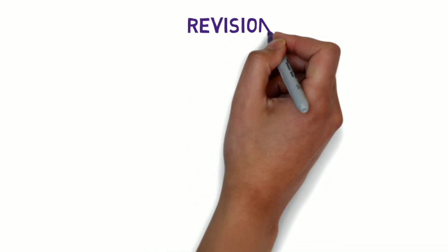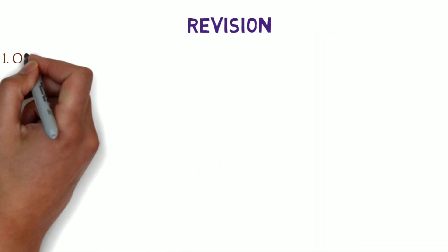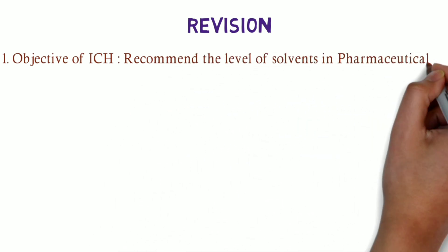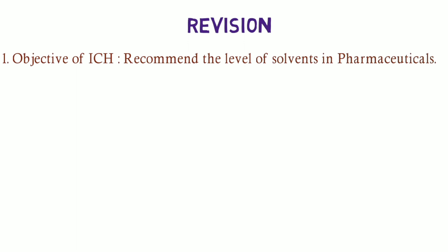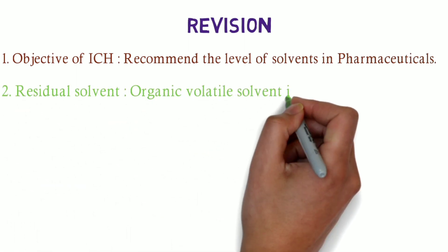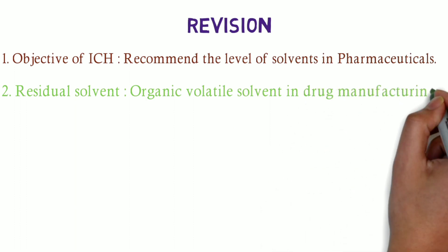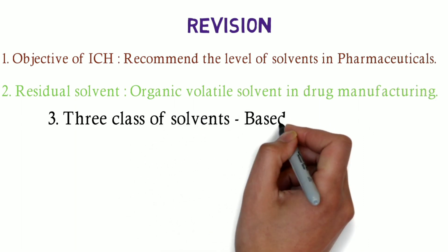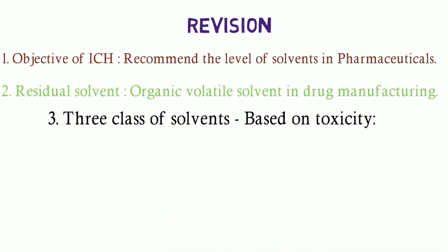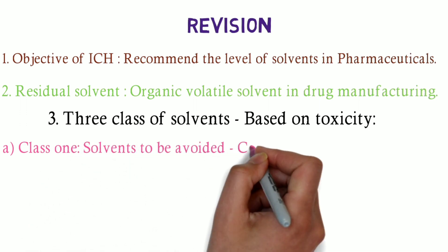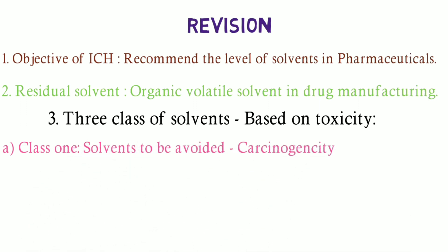Let us do a small revision. The objective of ICH guideline is to recommend the level of solvents in pharmaceutical products. Residual solvent is an organic volatile solvent used in drug manufacturing. Based on level of toxicity, 3 classes of solvents are available. Class 1 solvents are solvents to be avoided due to carcinogenicity — example: benzene and others.